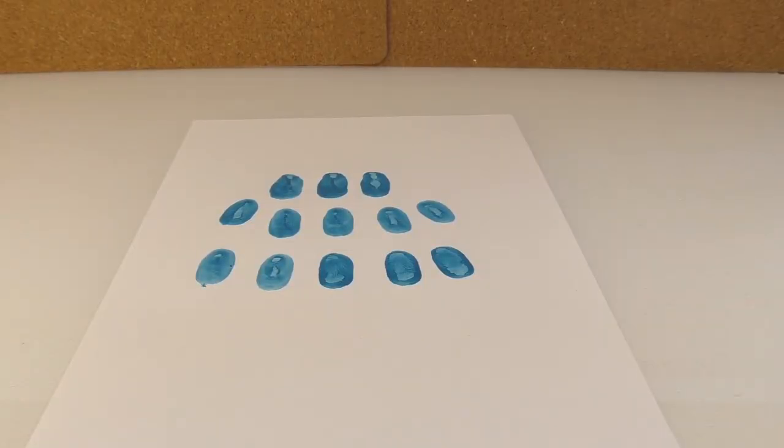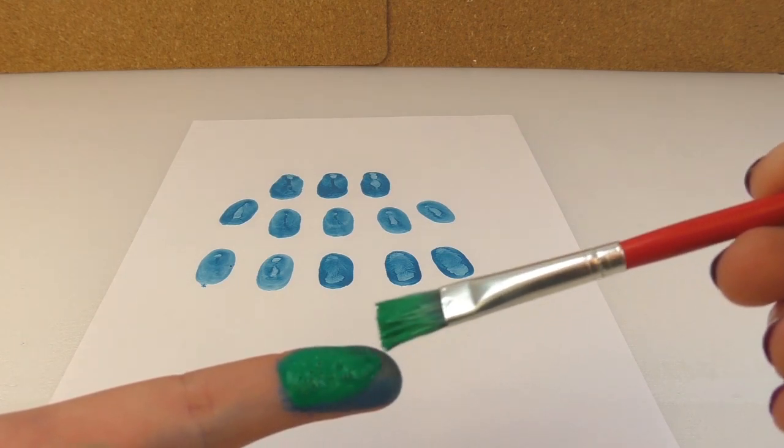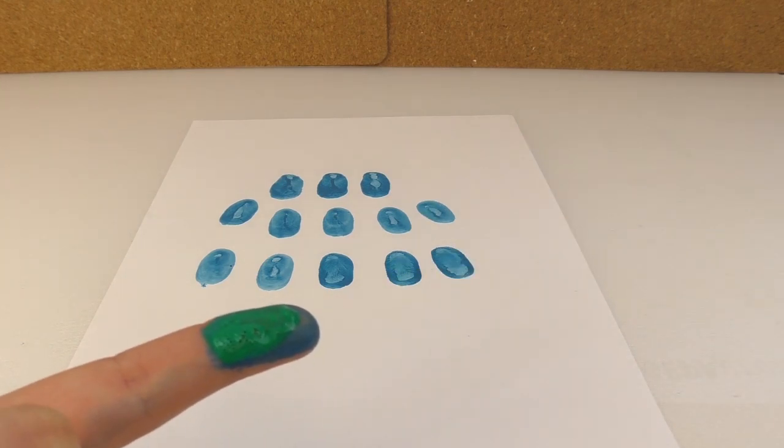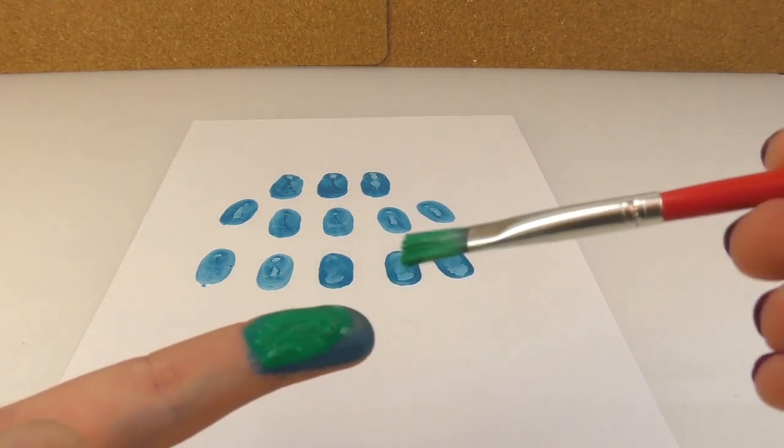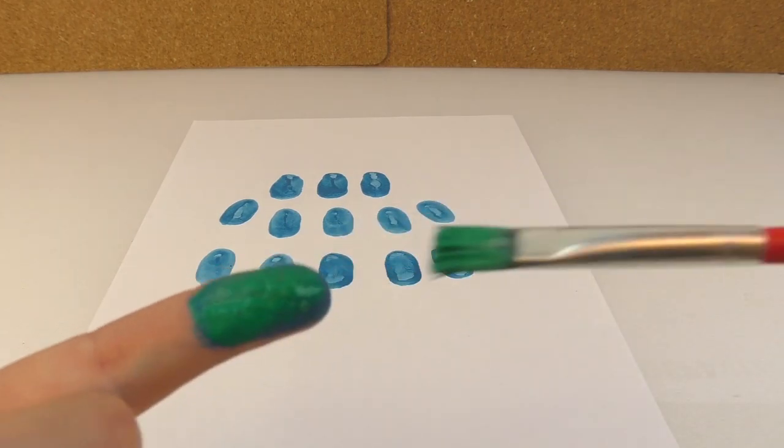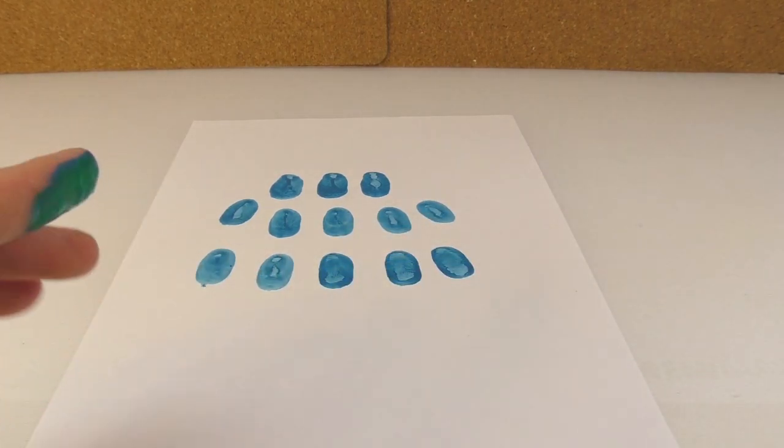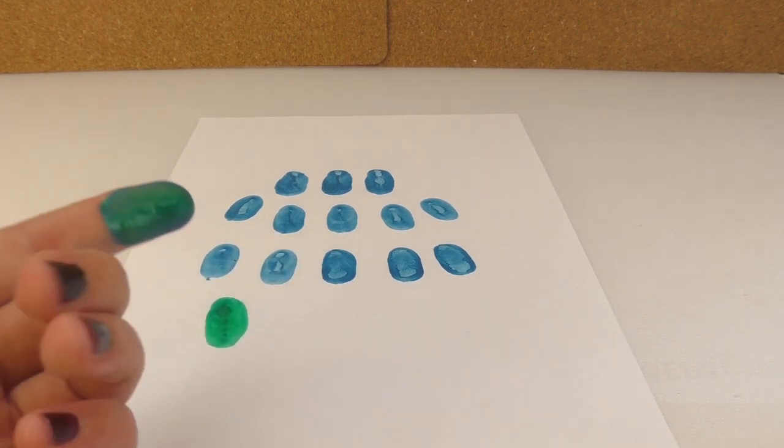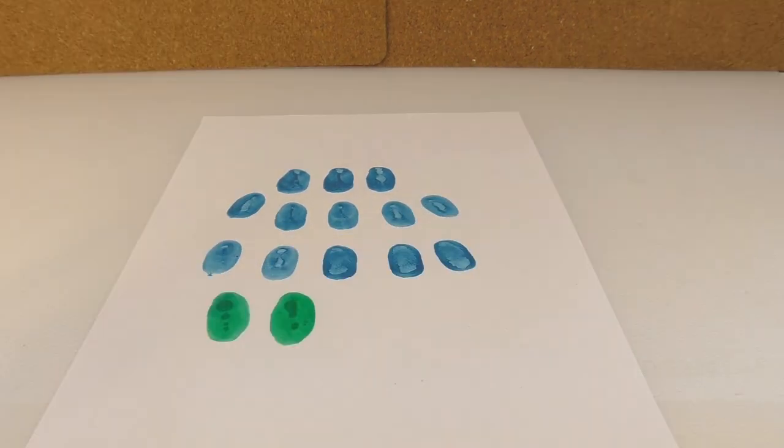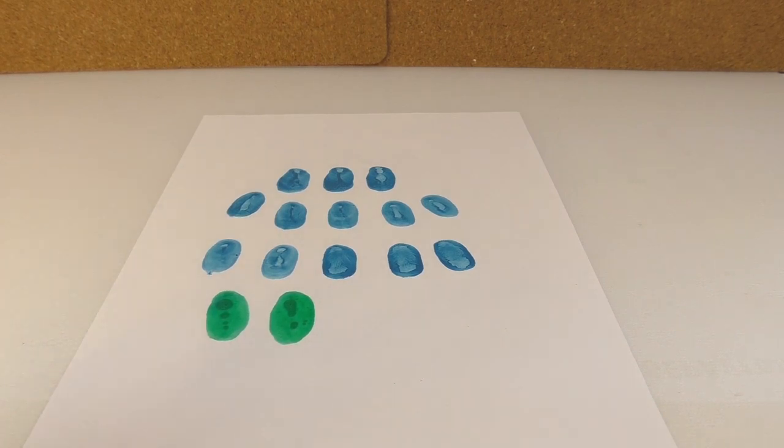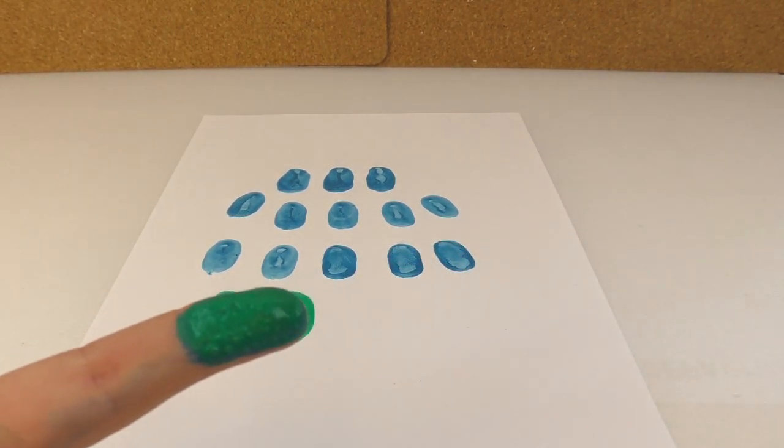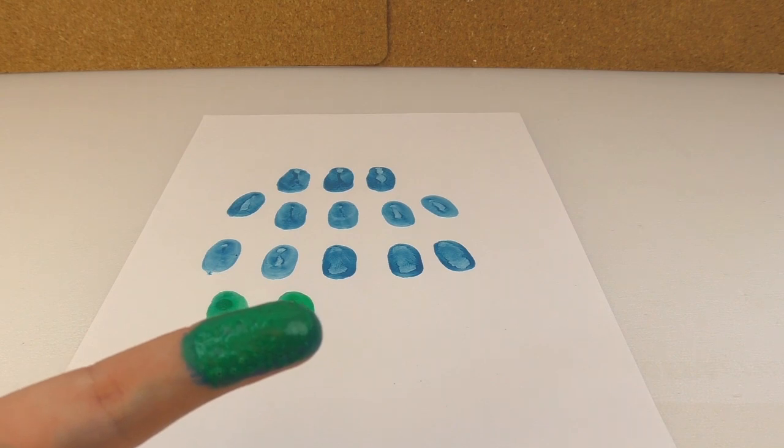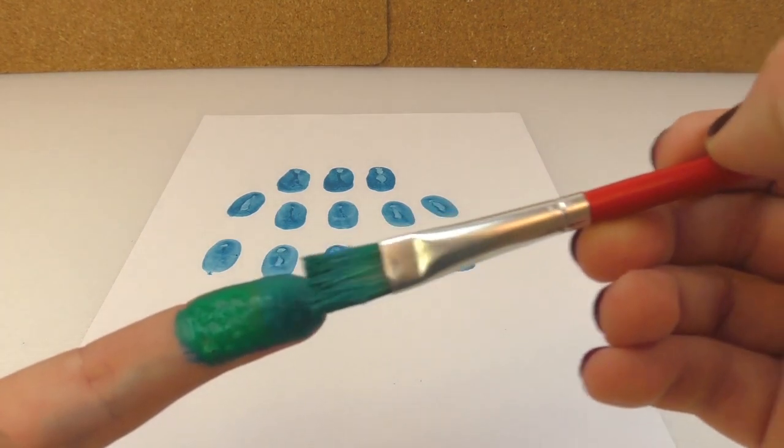You can also change the color, so I'm going to use green now. We want the colors to be bright so we're going to reapply the paint once we stamped our finger once. You can also mix the colors, so I'm going to mix the green with a little blue at the top.